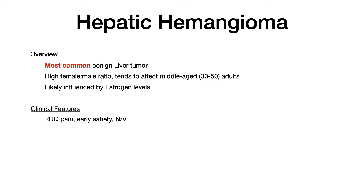Anytime we have a tumor in the liver, you're going to see some key clinical features: right upper quadrant pain, early satiety, and nausea and vomiting. There's a growth in the liver causing right upper quadrant pain, and the mass effect pushing on surrounding structures causes early satiety and nausea and vomiting. These clinical features apply to all benign liver tumors, not just hepatic hemangioma.